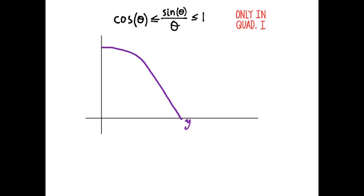Let's just draw a graph of this to visualize the picture. Oh, remember, only in quadrant 1, so I'll draw a graph in quadrant 1. There's the graph of y equals cosine theta, the bottom-most function, and then the top-most function would be the graph of y equals 1. And sine theta over theta is guaranteed in quadrant 1 to be in between those two.